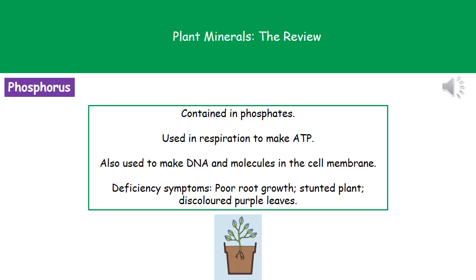Phosphorus is the second mineral we need, and it is contained in phosphates in the soil. We use phosphorus in respiration to make ATP, and also to make DNA and other molecules in the cell membrane. If we don't have enough phosphorus, the roots will show very poor growth, the plant will be stunted, and we'll get purple discolourations to the leaves.